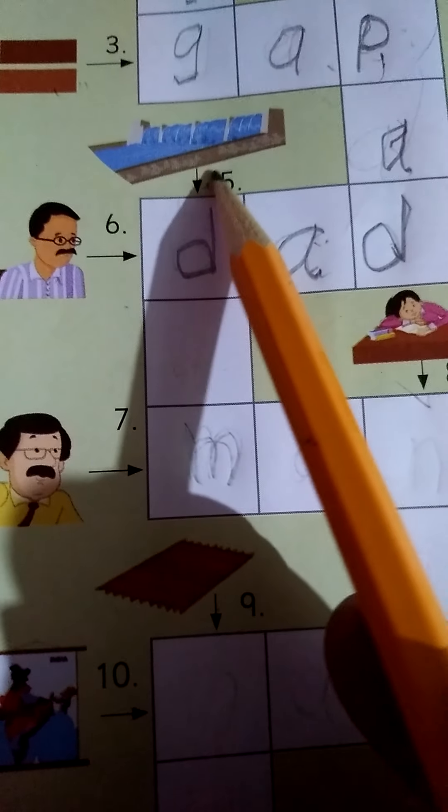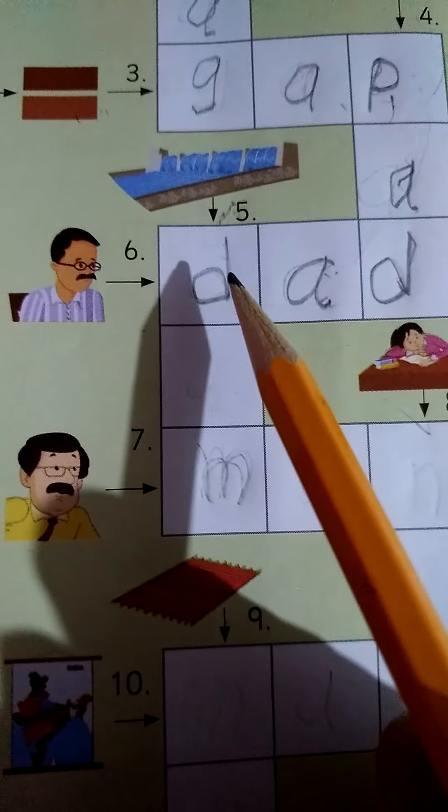What picture is this? This is dam. Row here. Dam. D A M dam.